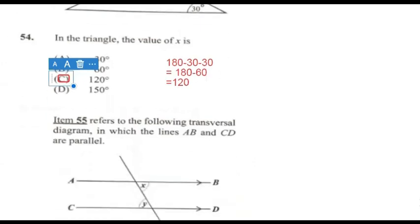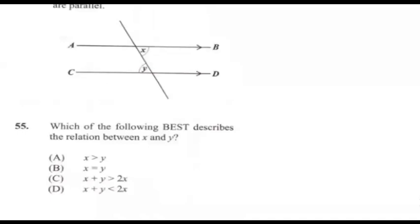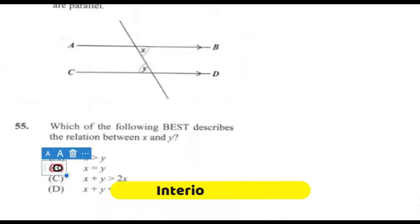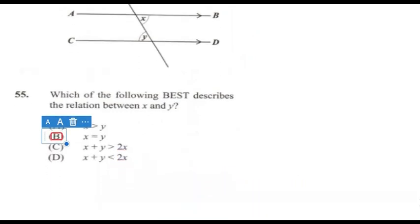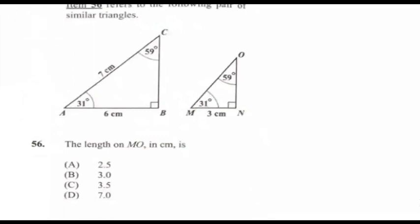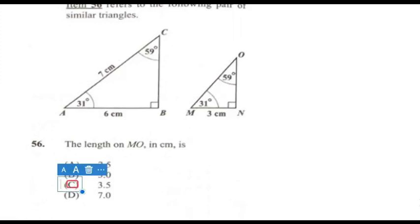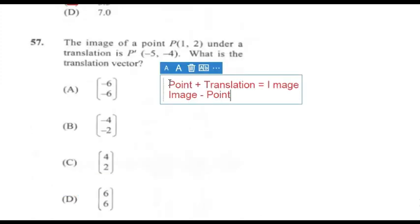Question 55: Which of the following best describes the relationship between x and y? The answer is x = y. We've worked this question multiple times — check the description for a more detailed explanation. Question 56: The length MO in centimeters. This new triangle is half of the original triangle. AB = MN = 6 cm, so MN = 3 cm. The angles remain the same. AC = 7 cm, so MO would be half of 7 cm, which is 3.5 cm.